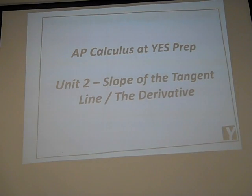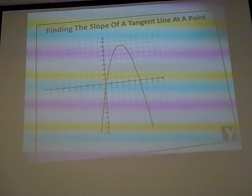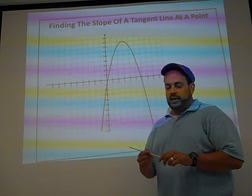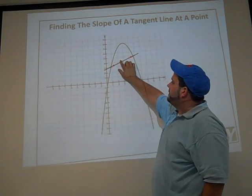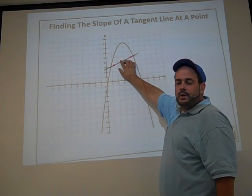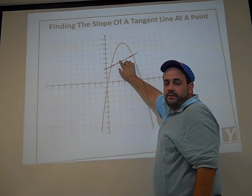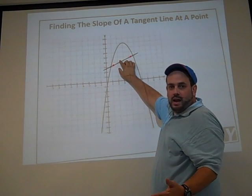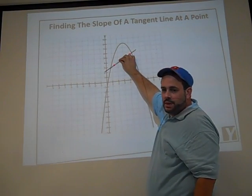We've been finding the slope of a line for a very long time — way back in algebra one. We would graph a line, and in order to find the slope we would pick two points on the line — those are the pink dots. We would find the slope between those using change in y over change in x. We'd expect to get a positive slope since this line is increasing.